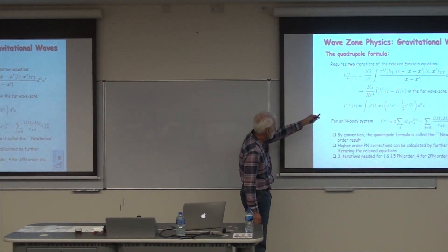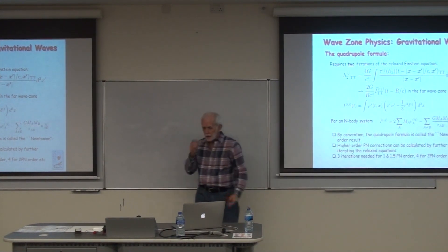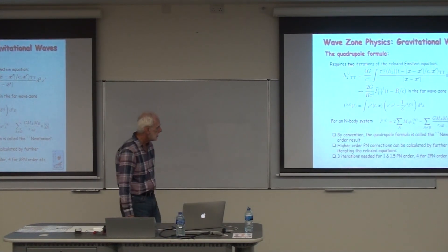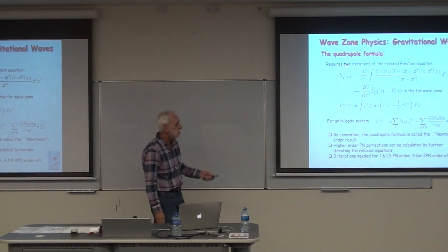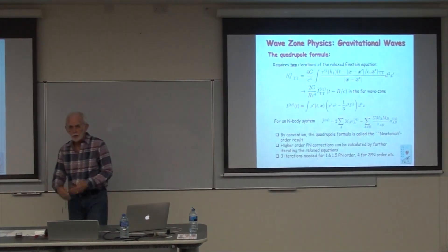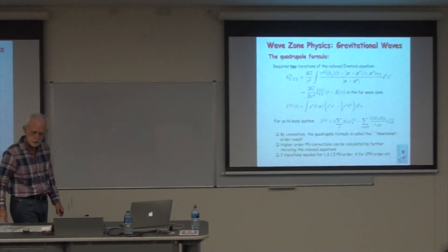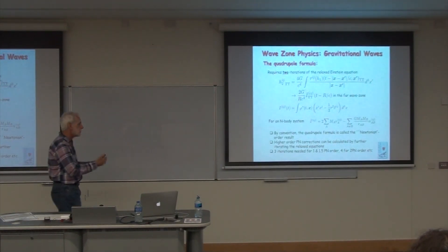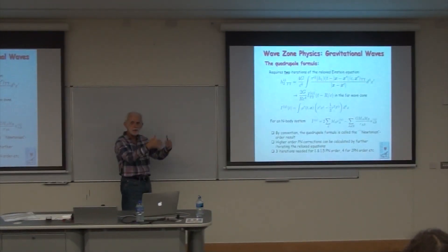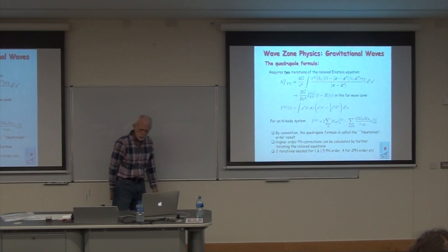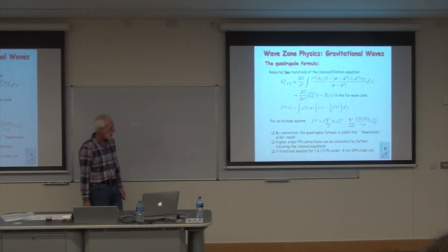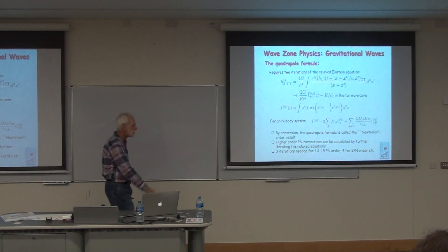You take the transverse traceless part if you want to calculate the geodesic deviation between two free-falling particles. You can carry this out to higher order. The whole point of this post-Minkowski and post-Newtonian approach is that it gives you a direct roadmap for going to higher and higher order. It gets more complicated the higher order you go, but it can be done almost algorithmically.